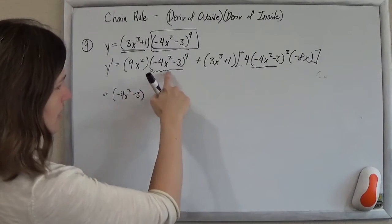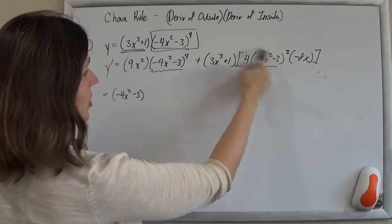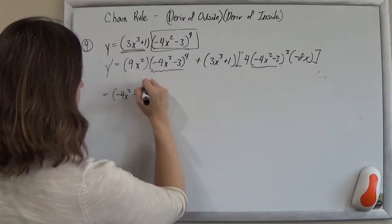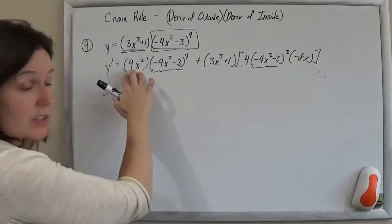So if I do that, I can factor out a minus 4x squared minus 3 to the third, right? 4 and 3, so I'm taking out a to the third. And if I do that, I'll be left with the 9x squared from here.